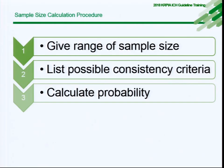When providing sample size recommendations to the study team, we typically give a range of sample sizes with different probabilities of meeting the consistency criteria. The team then makes a decision to choose an appropriate sample size. The decision of whether to have an extension is mostly operational — if the required Chinese sample size can be reached during the global cohort period, no extension is needed; otherwise, an extension is required.